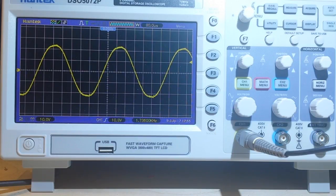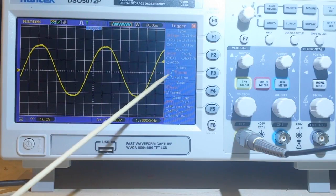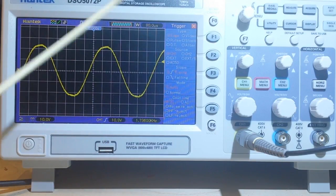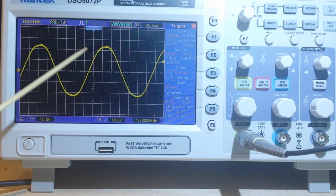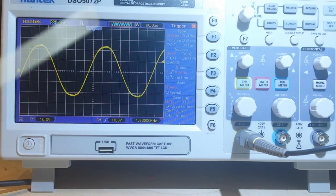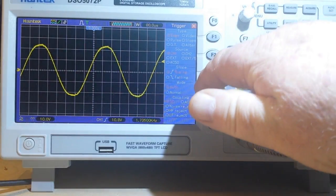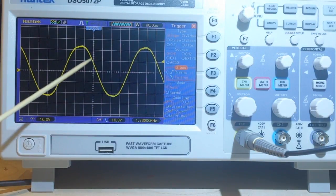Now most modern scopes can trigger in the edge mode on either a rising or a falling edge. So right now we're triggering on the rising edge. And you can see right here where our intersection point is on the rising edge of this signal. And if I switch to the falling edge, you can now see it is on the falling edge.